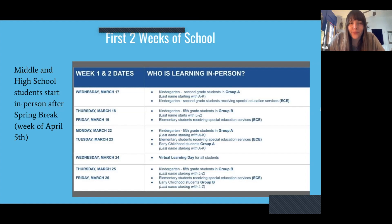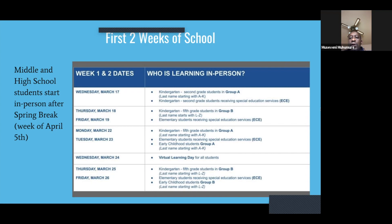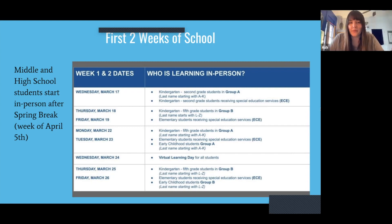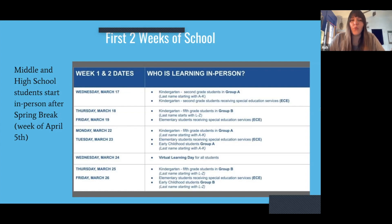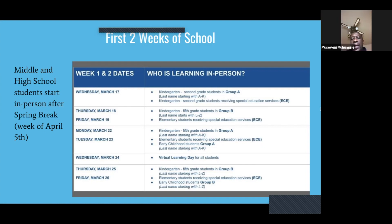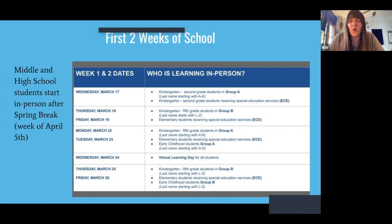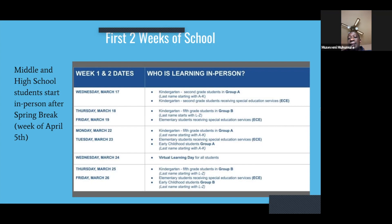Some important dates: the only day that's a little different is Wednesday, March 17th — that's kindergarten to second grade, Group A. That's the only difference in the schedule. The 18th and 19th are normal Group B days, and from then on it will be the same schedule. So once it starts on the 18th and 19th, that's the start of the normal A/B switch. It's just that first Wednesday that's a little bit different.